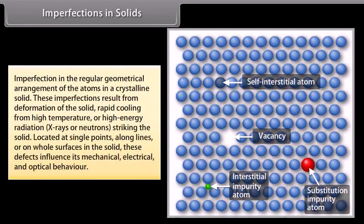Imperfections in solids are deviations in the regular geometrical arrangement of atoms in a crystalline solid. These imperfections result from deformation of the solid, rapid cooling from high temperature, or high energy radiation like X-rays or neutrons striking the solid. They can be located at single points, long lines, or on the whole surface of the solid. These defects influence mechanical, electrical, and optical behavior.